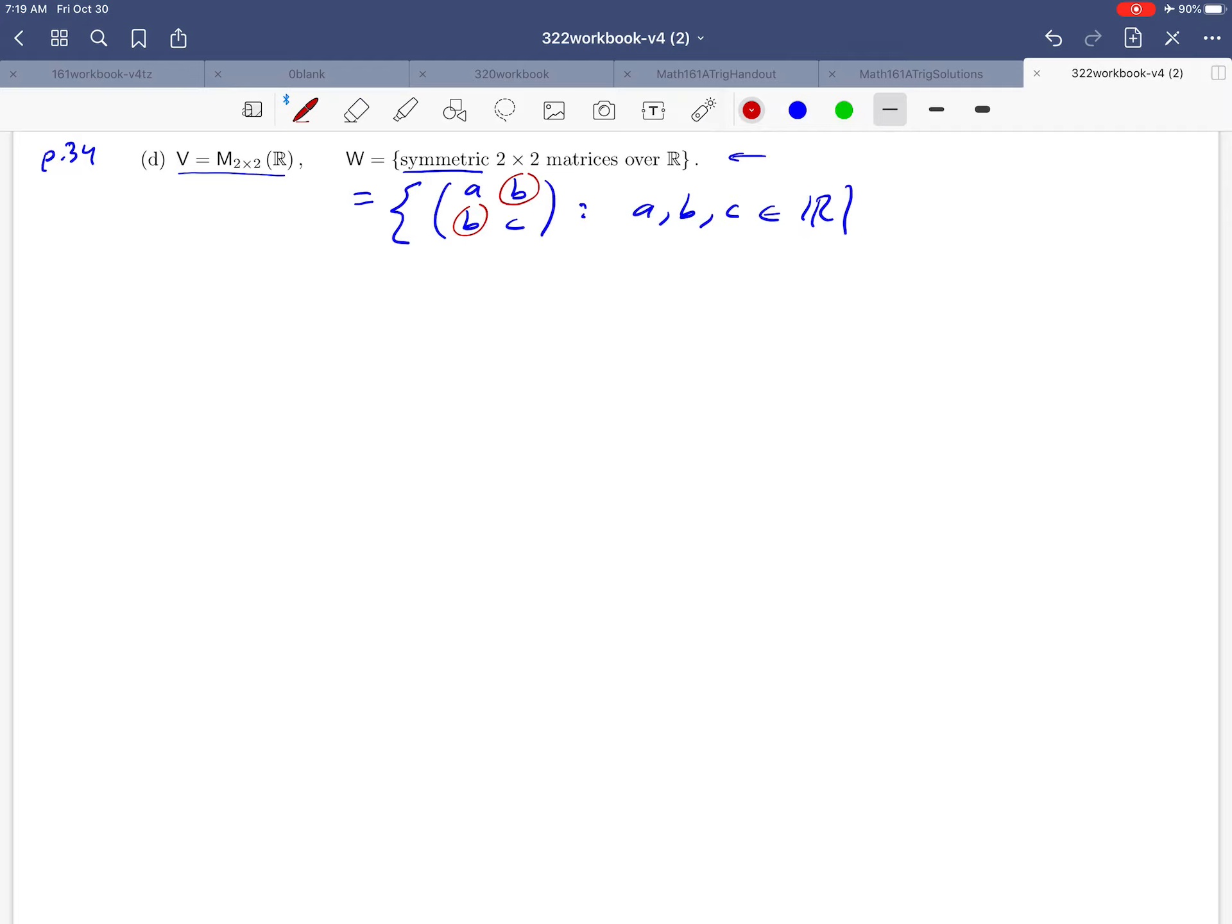And we recall again that we have a nice process for finding a basis for a vector space if we can write it as the span of a set of vectors. So, we'd like to take this description of W and see if we can rewrite it as a span of a set of matrices. We can use the same kind of general algebraic technique that we did before. Take this 2x2 matrix and just split it into pieces. So we've got an A in the upper left-hand corner, we've got B's on the off-diagonal, and we've got a C in the lower right-hand corner. Notice that that's equivalent to what we wrote above. We just kind of took this description of this 2x2 matrix and split it into three parts.